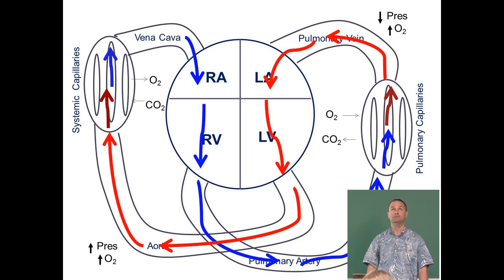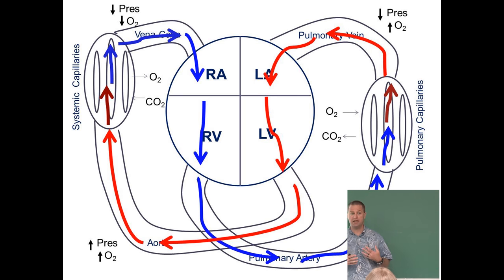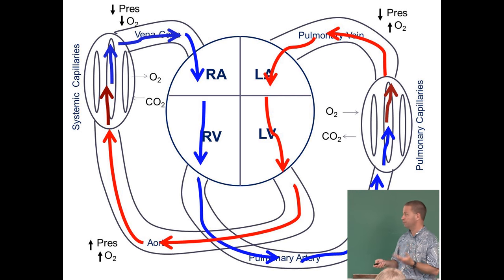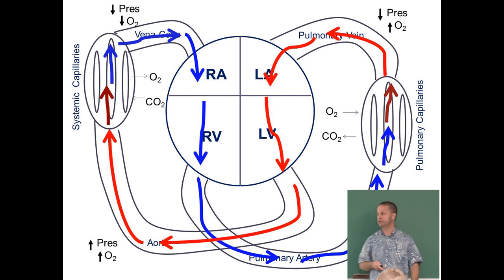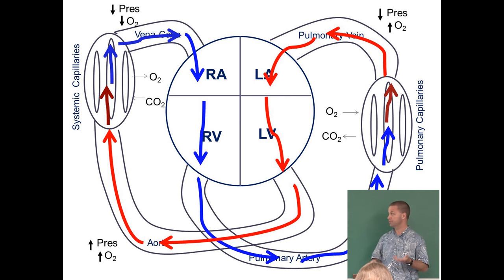Be able to do this in your sleep — draw this diagram and identify the oxygen concentration, CO2 level, and pressure at each point. For example: the pulmonary artery has high pressure, low oxygen, and high CO2. The test may ask you to put structures in order of circulation — to do that, you need to be able to draw this diagram. Understanding cardiac circulation is also essential for our next lecture on the respiratory system.